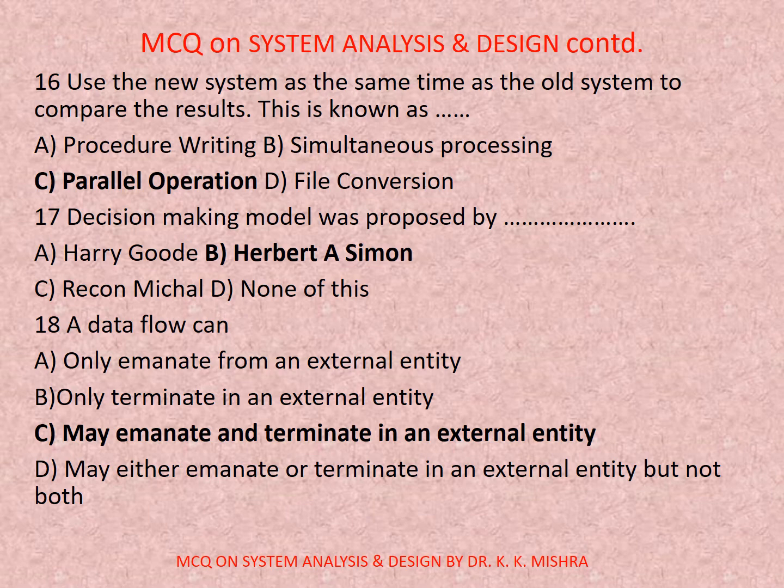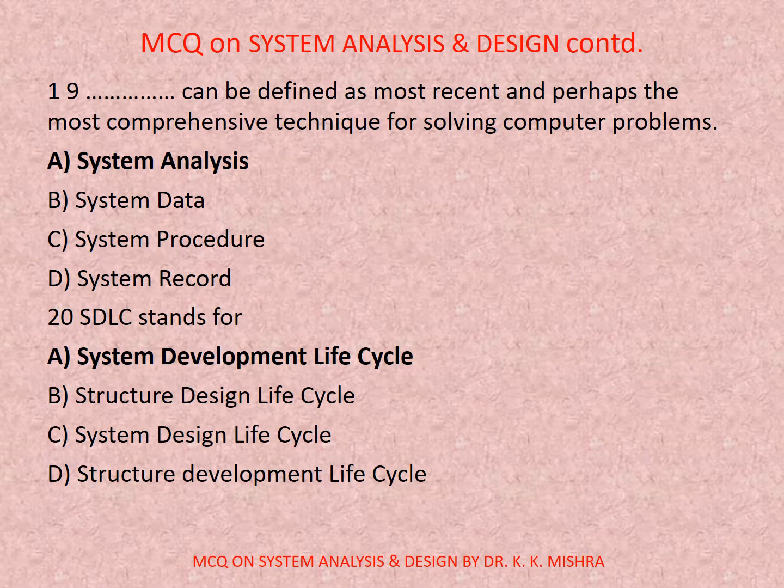Question number seventeen: The decision making model was proposed by. Options are: a) Harry Cod, b) Herbert A. Simon, c) Rick and Michael, d) none of these. Question number eighteen: Data flow in a DFD. Options: a) can only emanate from an external entity, b) can only terminate in an external entity, c) may emanate and terminate in an external entity, d) may either emanate or terminate but not both. Correct option is c) may emanate and terminate in an external entity.